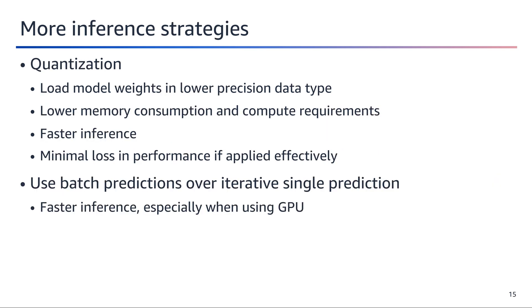Two more strategies to optimize inference are quantization and batch predictions. Quantization involves loading model weights into a lower-precision data type, such as 8-bit or 4-bit floating-point numbers instead of 16-bit or 32-bit, reducing the memory footprint and lowering computational requirements, enabling faster inference times. However, quantization needs to be applied judiciously to minimize any potential loss in model performance. Using batch predictions instead of processing inputs one by one allows the model to leverage parallelization and optimize computational efficiency, especially on GPUs, significantly speeding up inference times.